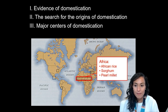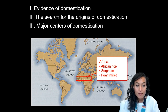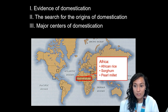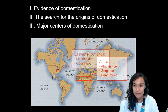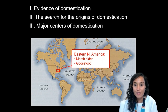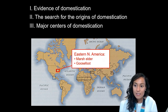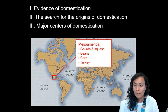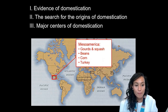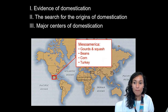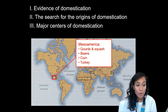We also have evidence for early domestication in Africa — again, a different set of crops, things like rice, sorghum, and millet. Moving into the Americas, we have early evidence for agriculture in places in the eastern United States, particularly of things like goosefoot and marsh elder. We also have evidence in the North American Southwest and into Mesoamerica of crops like gourds and squash, beans, corn, as well as the domestication of birds like turkeys.